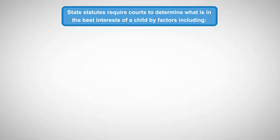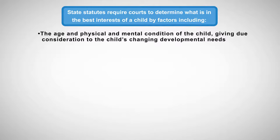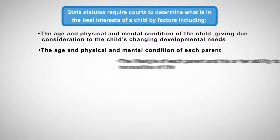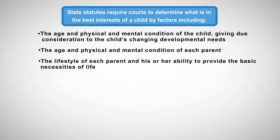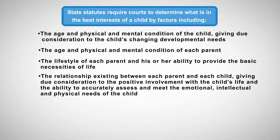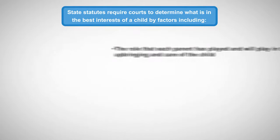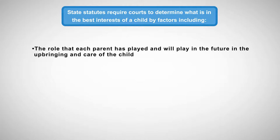State statutes require courts to determine what is in the best interest of a child by factors including: the age and physical and mental condition of the child, giving due consideration to the child's changing developmental needs; the age and physical and mental condition of each parent; the lifestyle of each parent and his or her ability to provide the basic necessities of life; the relationship existing between each parent and each child, giving due consideration to the positive involvement with the child's life, and the ability to accurately assess and meet the emotional, intellectual, and physical needs of the child; and the needs of the child, giving due consideration to other important relationships of the child, including but not limited to siblings, peers, and extended family members.